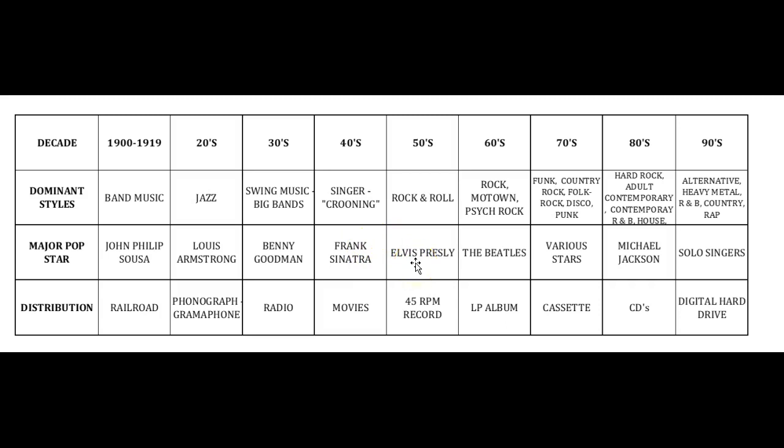Elvis was the number one seller of records in the 50s, yet he sang all black cover songs. The cover song is any song sung by a white entertainer that was written by or first performed by a black entertainer — we'll talk about that more next week. The most popular means of distributing music at that point was the 45 RPM, a smaller record with a big hole in it.